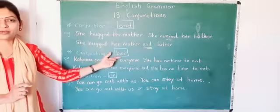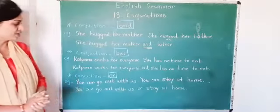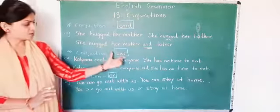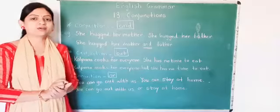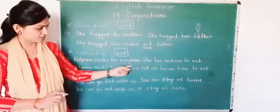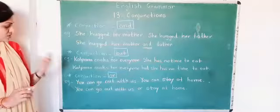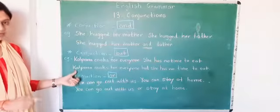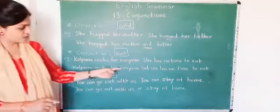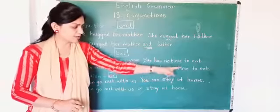Next, about conjunction 'but'. We use the conjunction 'but' to join opposite ideas or things. For example: Kalpana cooks for everyone. She has no time to eat. These are two separate sentences. So we write: Kalpana cooks for everyone, but she has no time to eat.